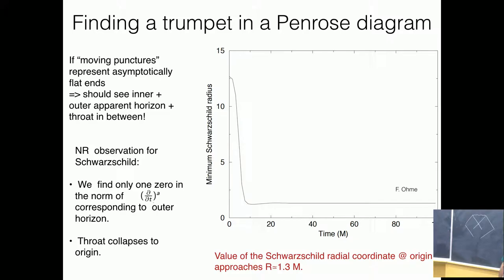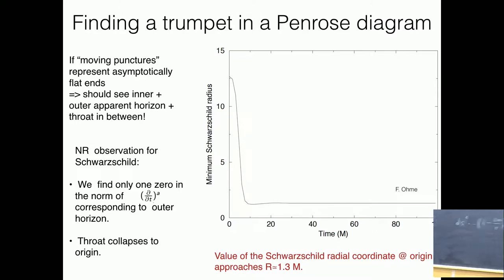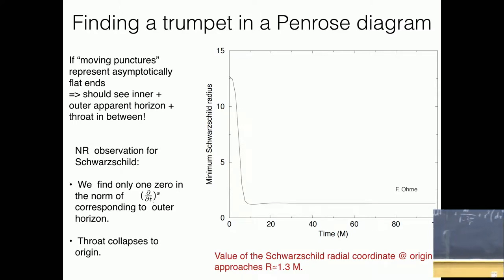The full Schwarzschild line element is: (1 − 2m/r) dt² + dr²/(1 − 2m/r) + r² dθ² + r² sin²θ dφ². The φ coordinate — everything is also actually symmetric. That's the least boring one, so you don't have to usually consider it.